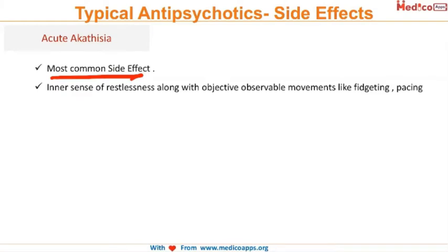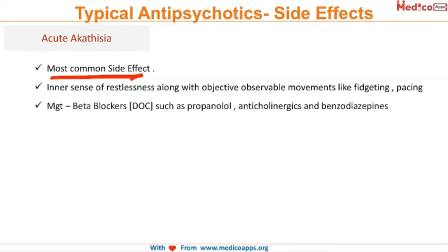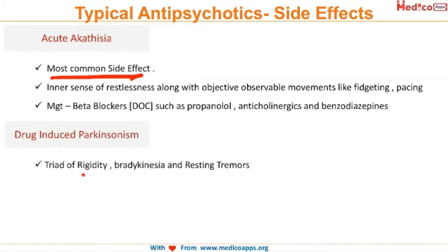Acute akathisia is the most common extrapyramidal side effect. There is an inner sense of restlessness along with objective, observable movement like fidgeting and pacing. Management: the drug of choice is propranolol (a beta blocker); anticholinergics and benzodiazepines can also be given.